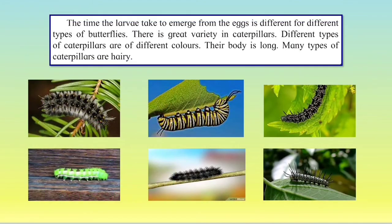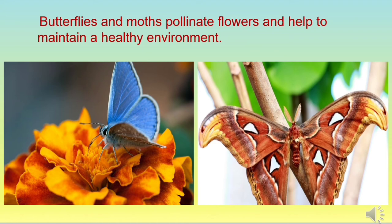The time the larva takes to emerge from the egg is different for different types of butterflies. There are a variety of caterpillars — different colours, different types, some bodies are longer, some are fatter, some are thin, some are hairy. You can see the picture here. Butterflies and moths pollinate flowers and help to maintain a healthy environment.